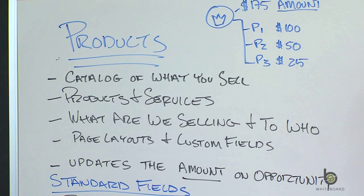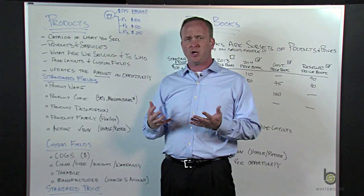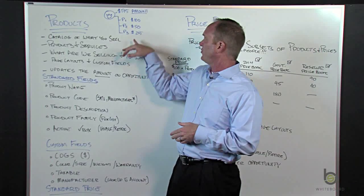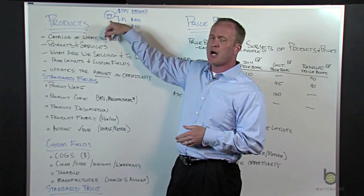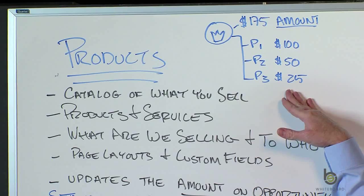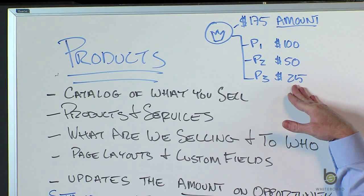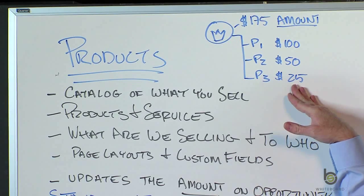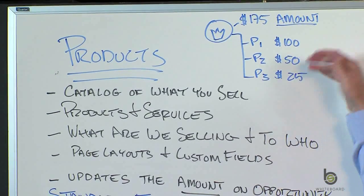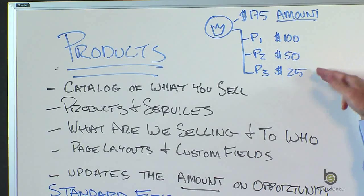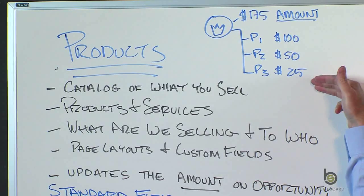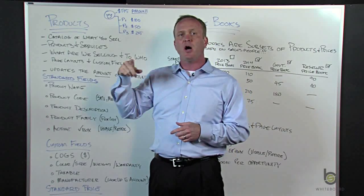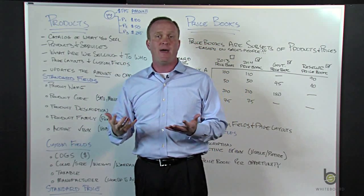Products is an object, just like anything else in Salesforce — like an account, contact, or an opportunity. You have page layouts and custom fields. When you turn on products and start using them to associate products to an opportunity, when you start adding products with pricing, it takes over the amount field on the opportunity. As you can see in this example, we've got the amount field, and it starts updating that automatically, so you don't have to do the math.